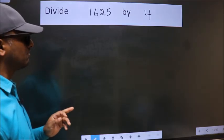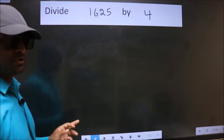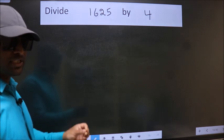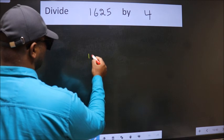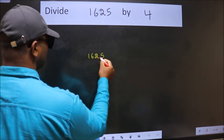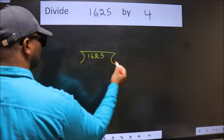Divide 1625 by 4. To do this division, we should frame it in this way: 1625 here, 4 here.